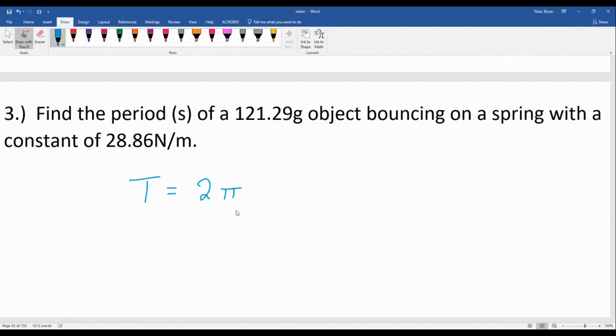In this case, it means like a full cycle. Then it gets multiplied by a big square root of the mass of the object bouncing around divided by the spring constant.